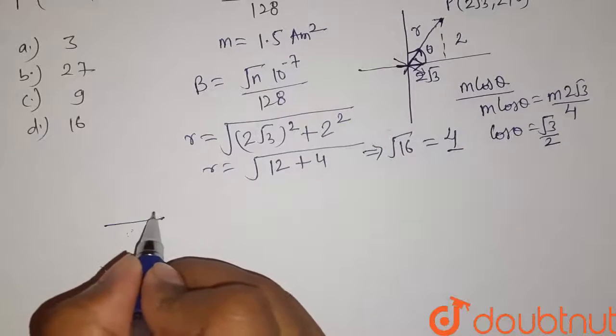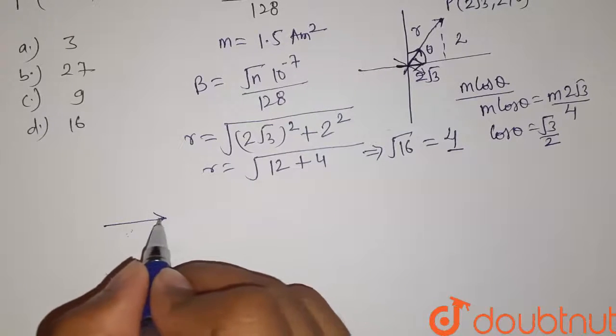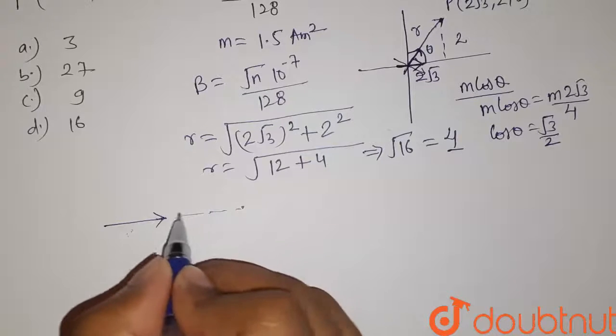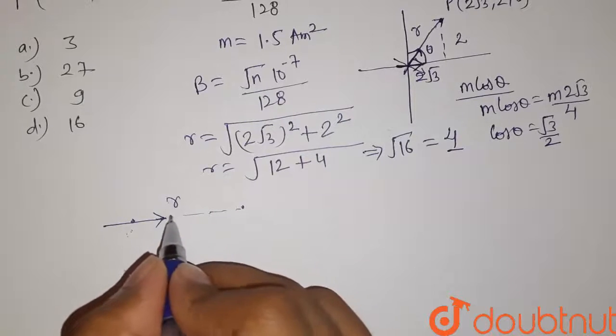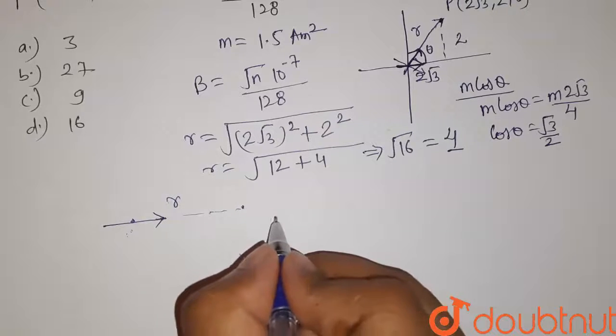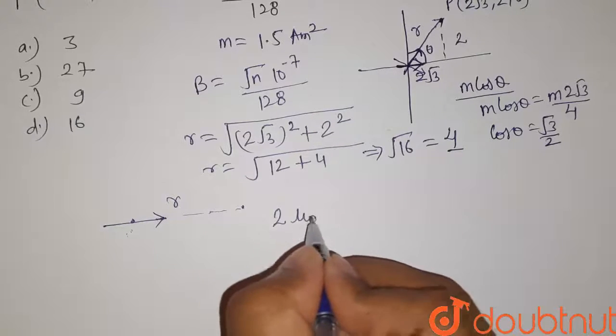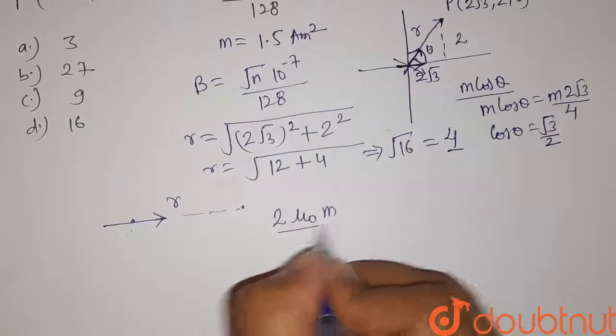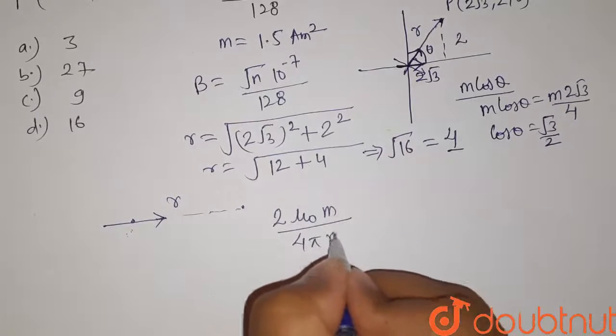If we have a dipole in this direction, then at some distance r, the magnetic field on the line joining this dipole is given by 2 into μ₀m divided by 4πr³.